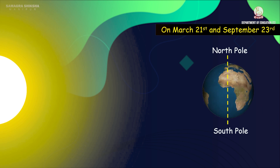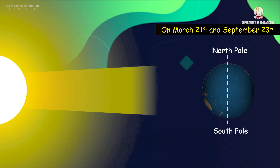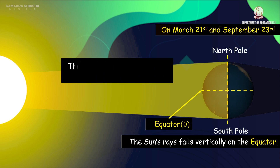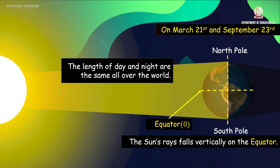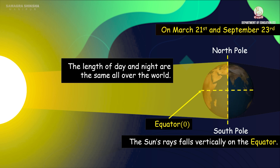On March 21st and September 23rd, the earth occupies such a position that the sun's rays are vertical at the equator. As a result, the rays of the sun can reach both the north pole and the south pole. On these two days, day and night are of equal length — 12 hours each — all over the world. These two days are called equinox.